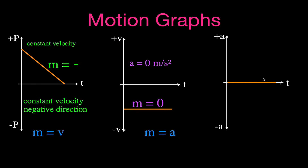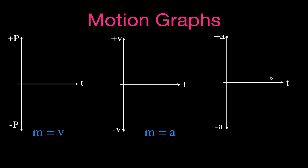Now we're going to do the accelerating graphs — there are four. We'll cover speeding up and slowing down in both the positive and negative direction. The first accelerating graph is a curved line, which has a changing slope and therefore indicates acceleration.